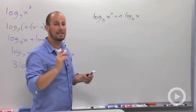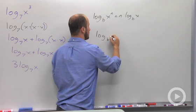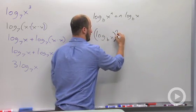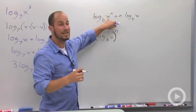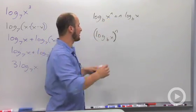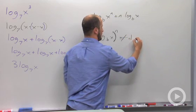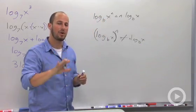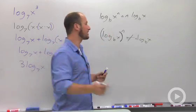One thing to be very careful of though is this is not the same thing as if we have log base b of x to the n. This only works when that exponent is on the term inside the log. This one is not equal to n log base b of x. You can only do it if the exponent is on the thing inside, not if the whole logarithm is to the power.